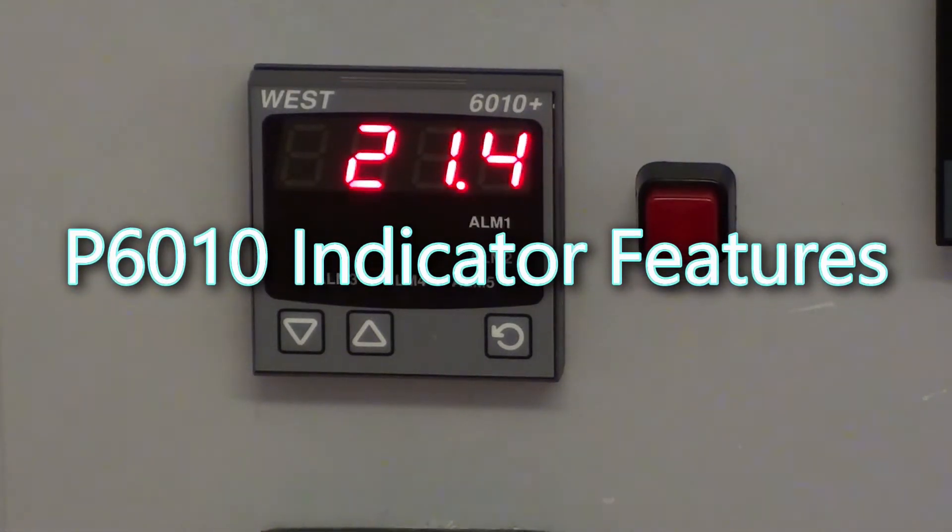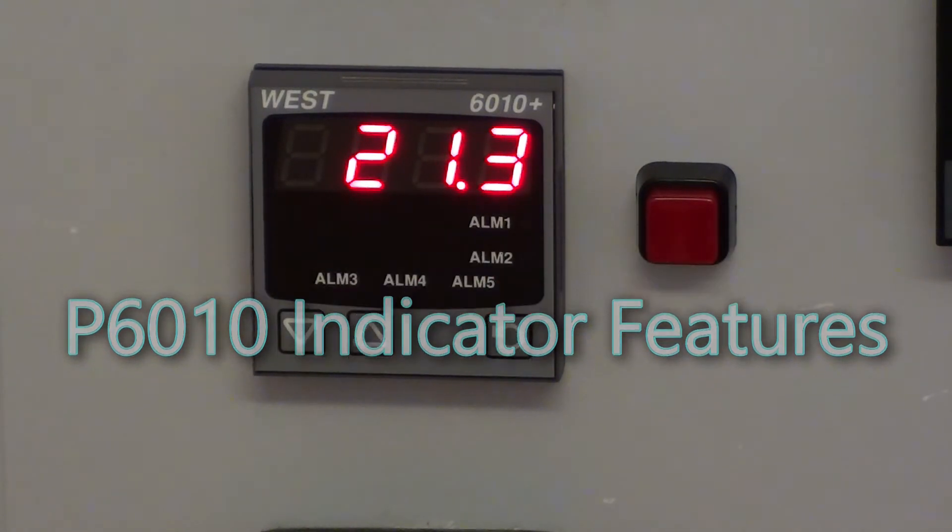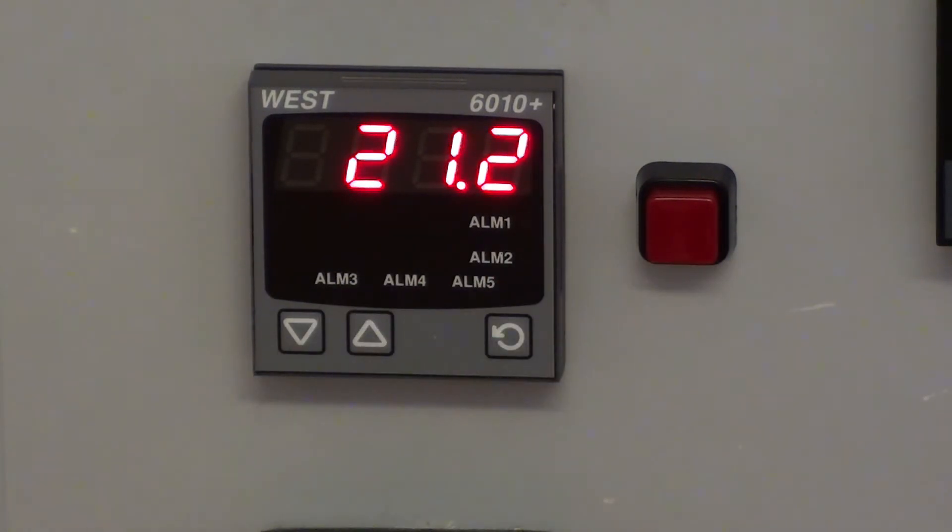The P6010 is a 1/16th DIN digital panel indicator, 48mm high, 48mm wide, with a back-of-panel depth of 110mm.